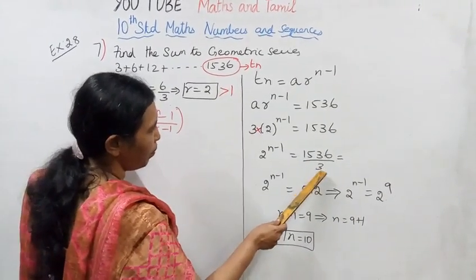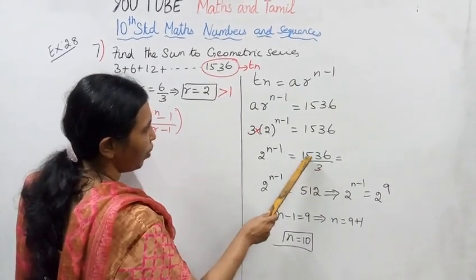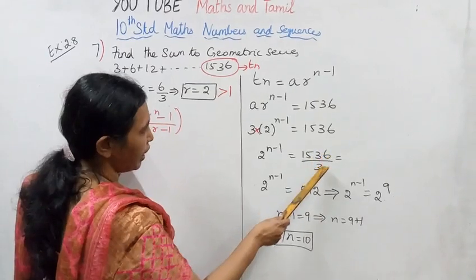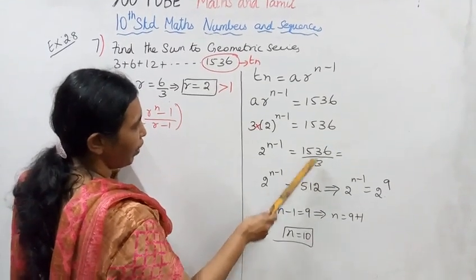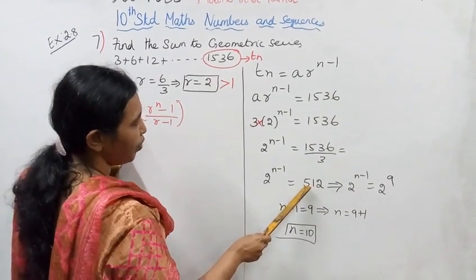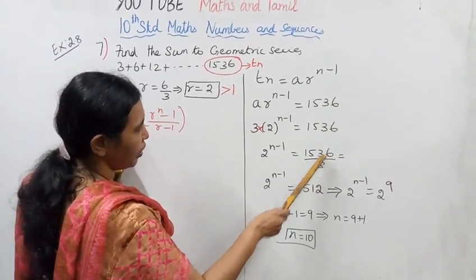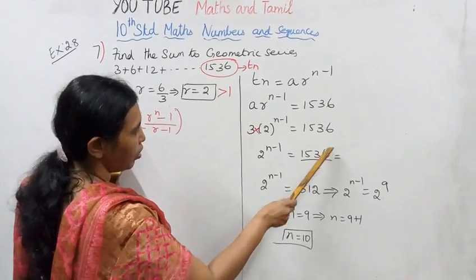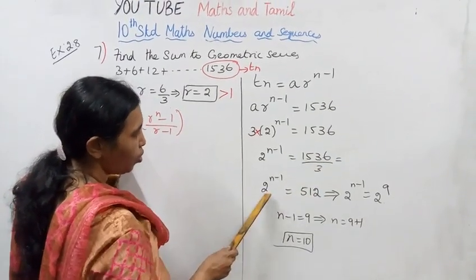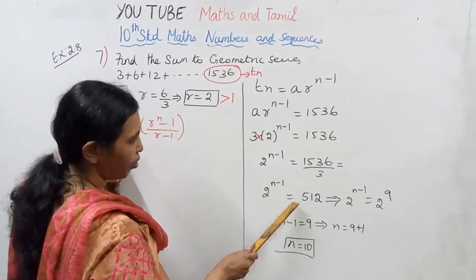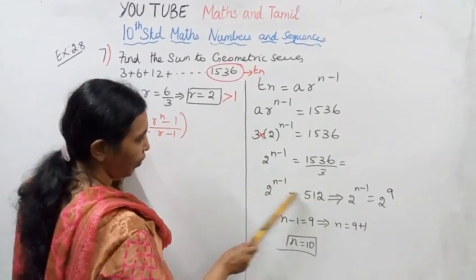We divide 1536 by 3. Dividing: 1536 divided by 3 — 3 into 15 is 5, 3 into 3 is 1, 3 into 6 is 2 — giving 512. So 2^(n-1) equals 512.